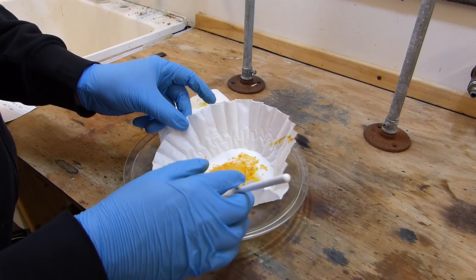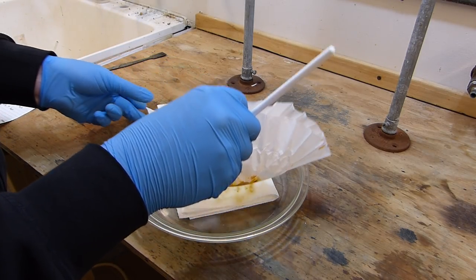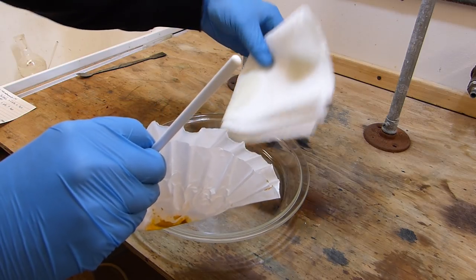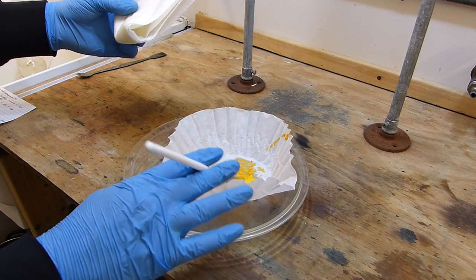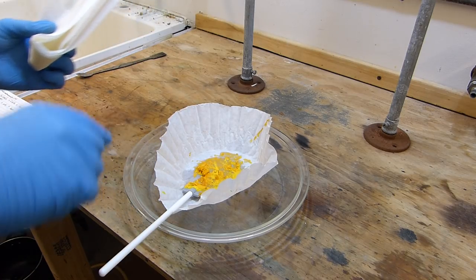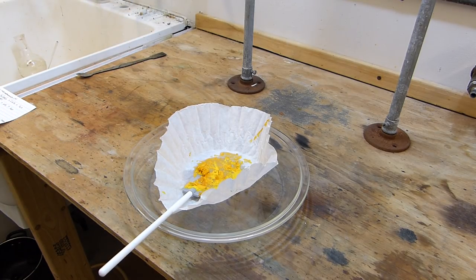So the paper towels have pretty much done their job so I'm going to go ahead and fold this back up. This gets disposed in the heavy metals waste. This goes directly on the glass pan and I'll get a hot water bath going to heat that up and dry it to a powder.